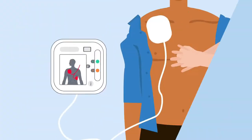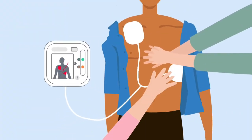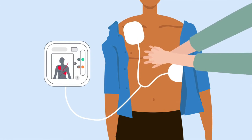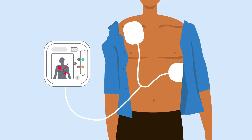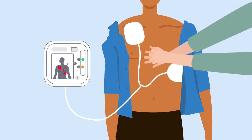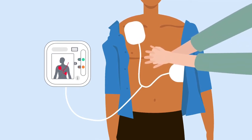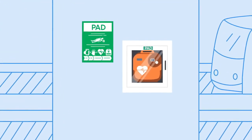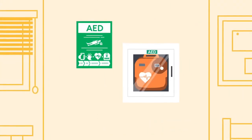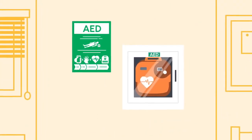AEDs can be semi-automated or fully automated. Semi-automated defibrillators analyse the heart's rhythm, and if an abnormal heart rhythm is detected that requires a shock, the device prompts the user to press a button to deliver a defibrillation shock. Fully automated defibrillators analyse the heart's rhythm and deliver a defibrillation shock if commanded by the device software without user intervention.